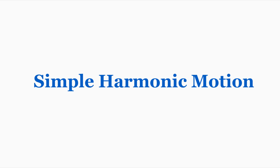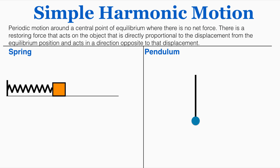This lecture is going to be about simple harmonic motion, which has a very precise definition that's important to understand. The definition is periodic motion around a central point of equilibrium where there is no net force. There is a restoring force that acts in the opposite direction proportional to the displacement from the equilibrium position and acts in a direction opposite to that displacement. That definition is pretty advanced — I'm going to take you through it one step at a time.